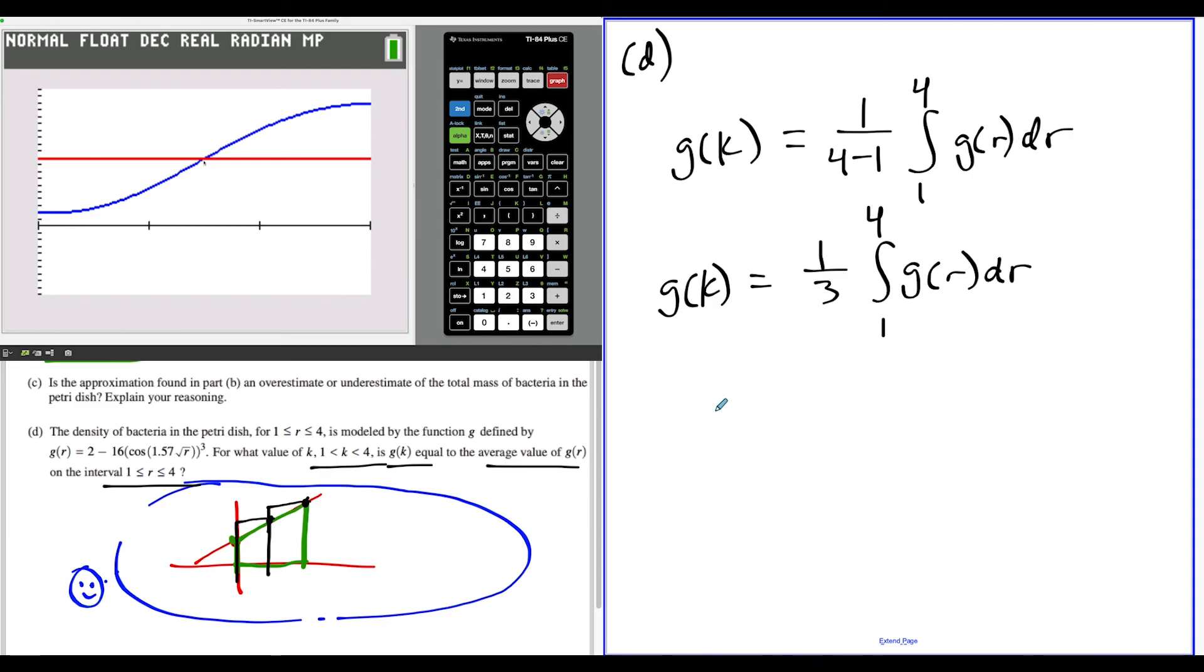Notice the point of intersection. We're going to press 2nd TRACE number 5. This will tell us when we trace this intersection point. We press enter before, scroll a little bit after, and press enter a second time. This gives us the value of k that tells us when the function equals the average rate of change. So we record our value: k equals 2.497.